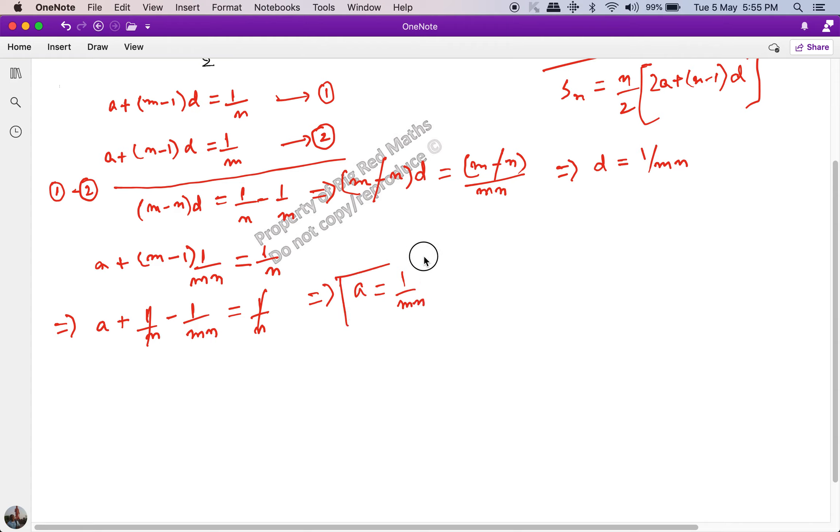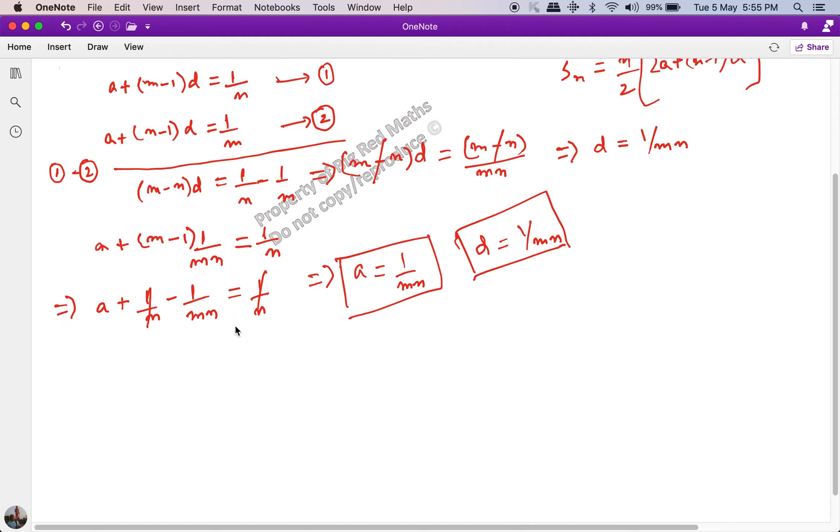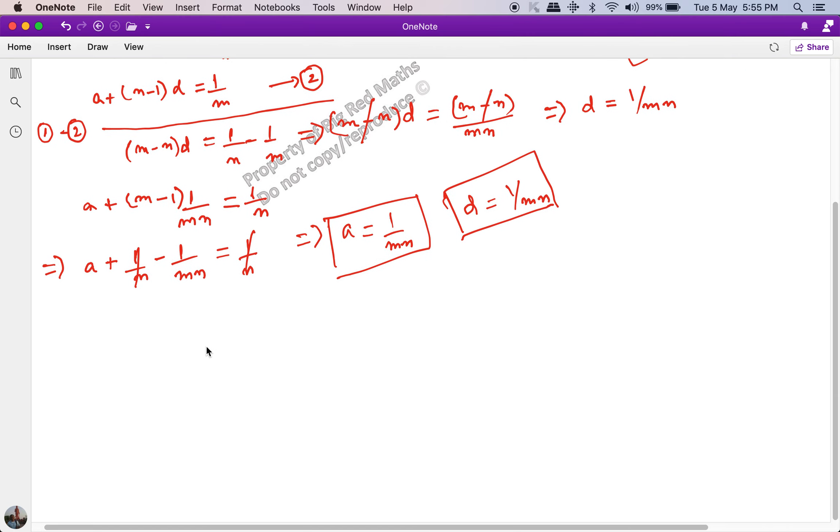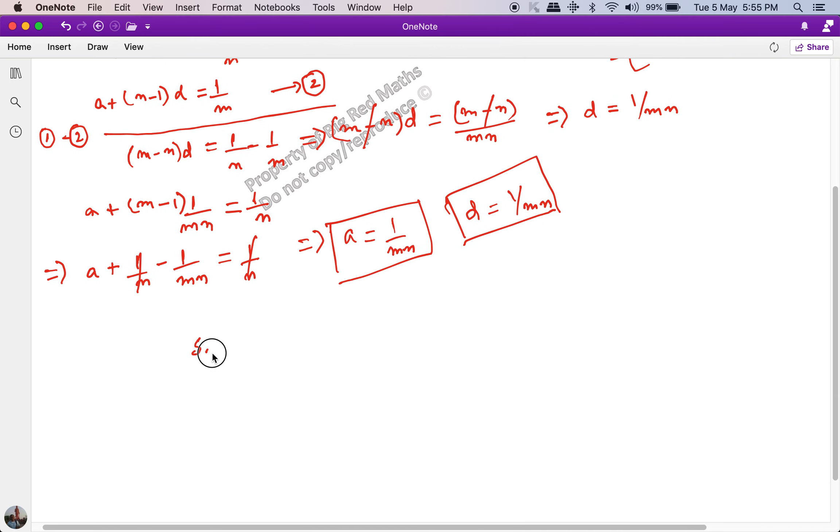This 1 upon n and 1 upon n gets cancelled, and what you get is a is equal to 1 upon mn. So what we realized is that the value of a and the value of d is both 1 upon mn. All we have to do is plug in this value in the equation for the sum of the first mn terms.